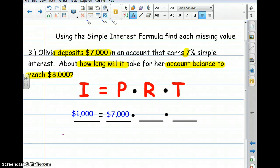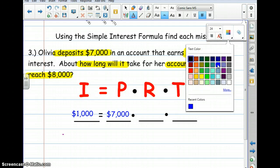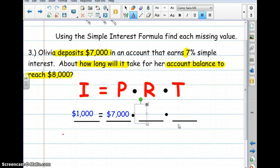Now we determine, do we know the rate? We do - they told us that the interest rate was 7%. Remember that we have to convert any interest rate or any percent into a decimal before we can multiply it by anything, so 7% as a decimal is 0.07.